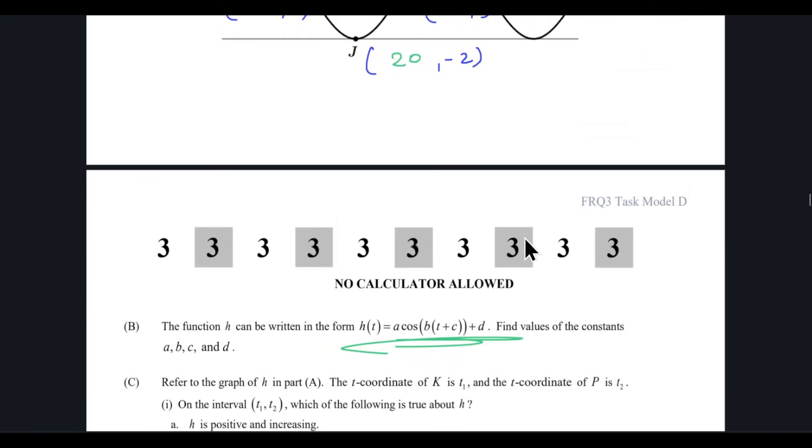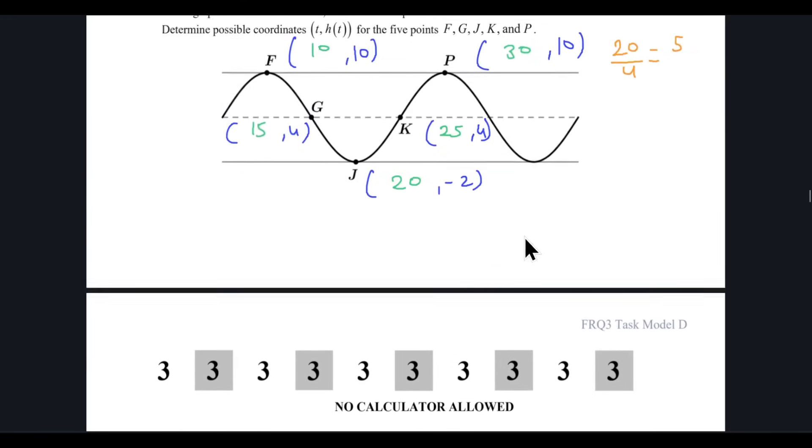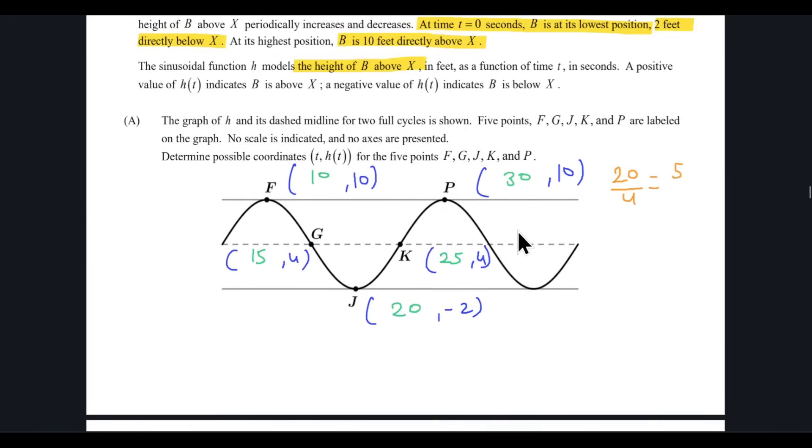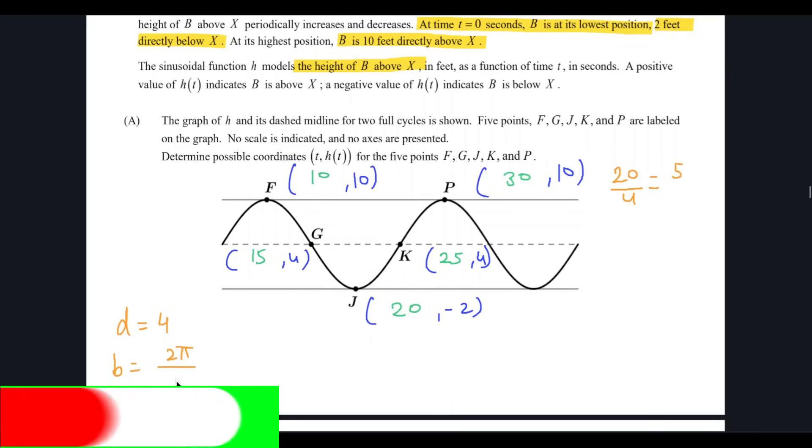Then they are asking us to find the value of A, B, C, D. So let's do the value of D and B, these are the easiest. D is the midline that we know is just 4. B is 2 pi over period. Period is 20, so 2 pi over 20 is just pi over 10. So that's the value of B.